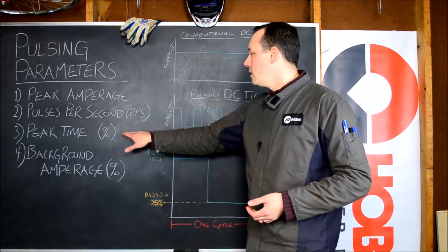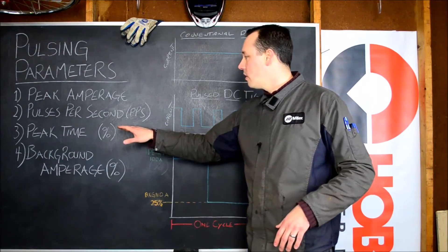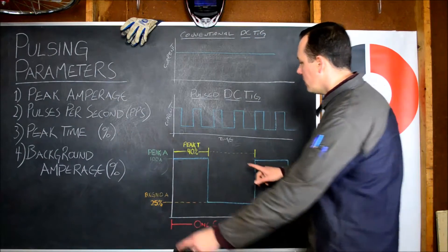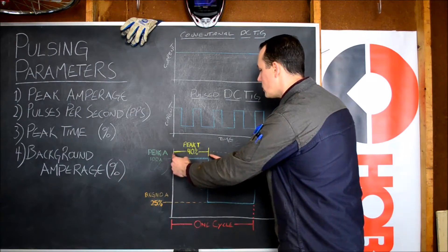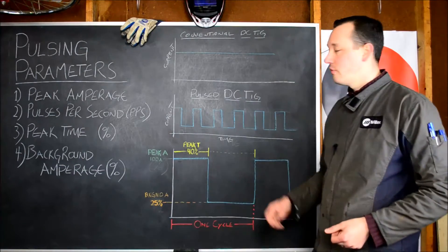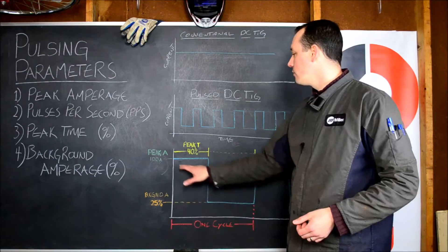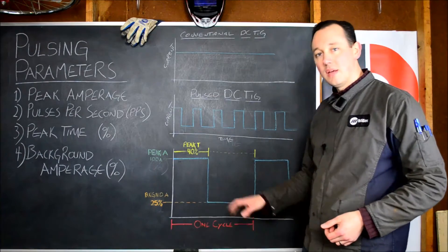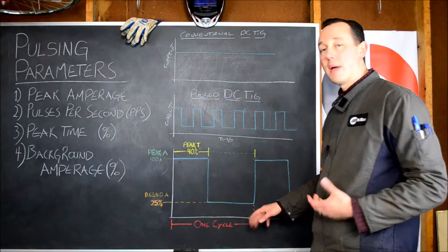Next we have peak time. Now on the Miller machines this is always programmed as a percentage. So it's the percentage of time at peak relative to one full cycle. So if your peak is set at 40%, 40% of that cycle is going to be spent at peak, 60% is going to be spent at the background amperage.